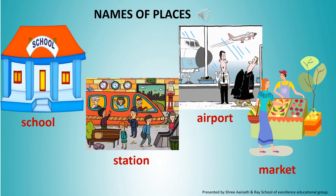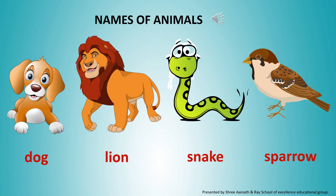Some more examples of places are park, office, library, Taj Mahal. Dog, lion, snake, sparrow — all these are names of animals. Some more examples of animal names are cow, dog, butterfly, parrot.